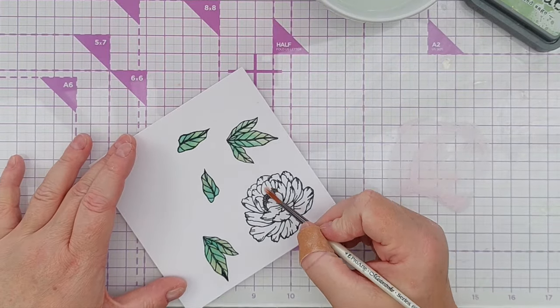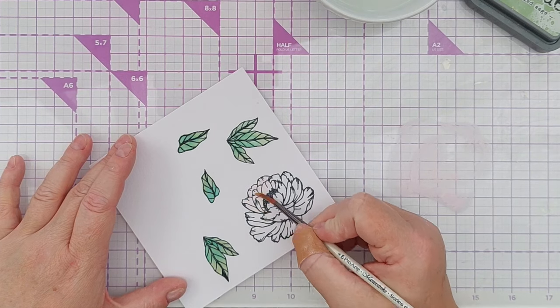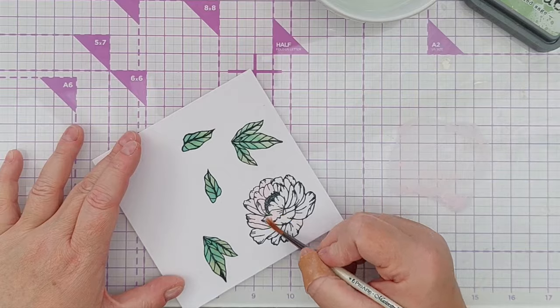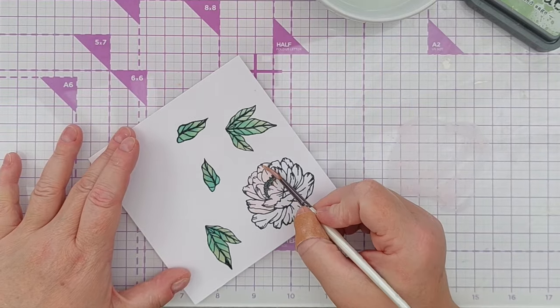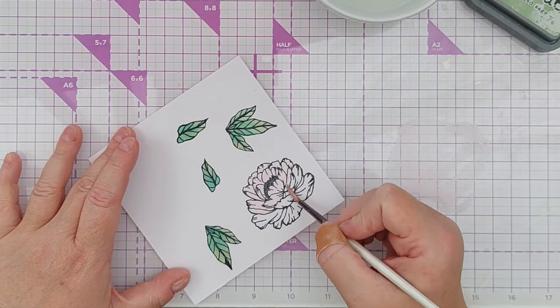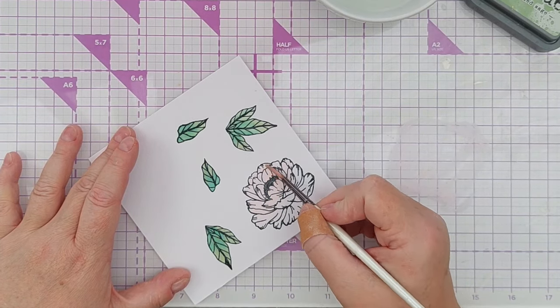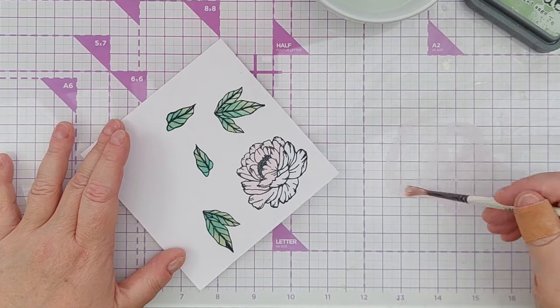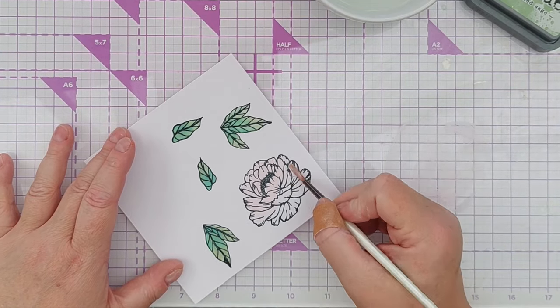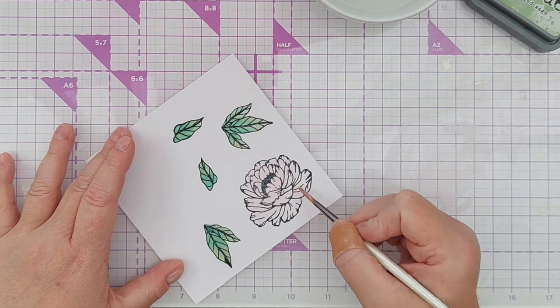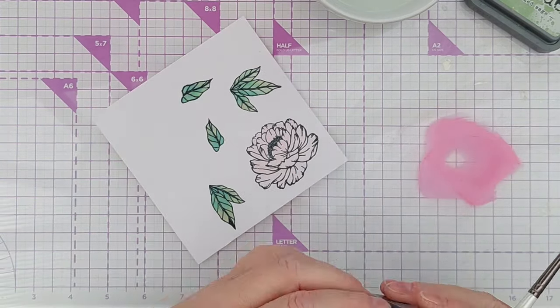So I smushed some Spun Sugar onto my glass mat, added some water, and painted that over the whole of the flower. Then I smushed a bit of Kitsch Flamingo onto my mat, added water, and painted it in the shadow areas where the petals would be in shadow from the petals above them.